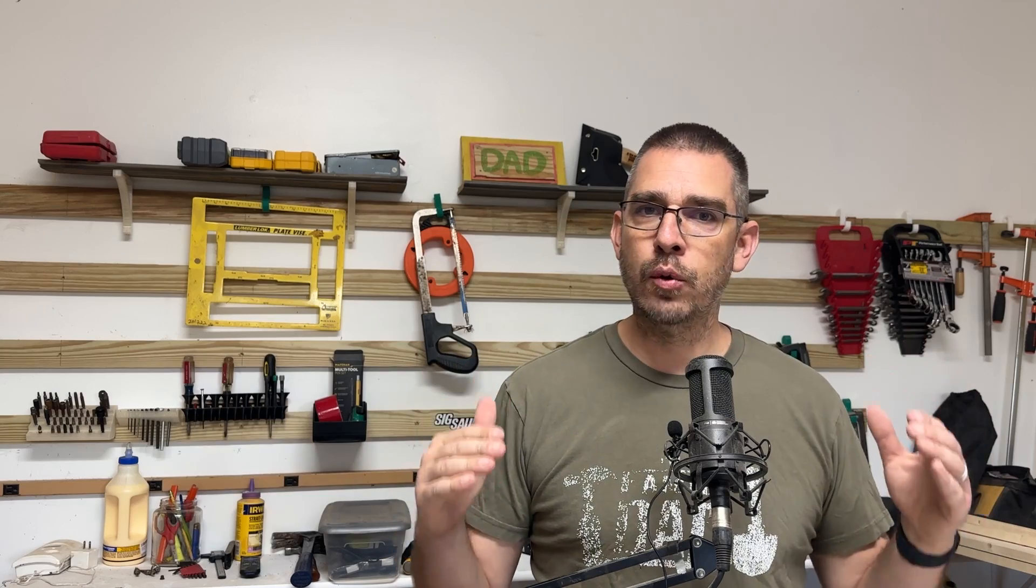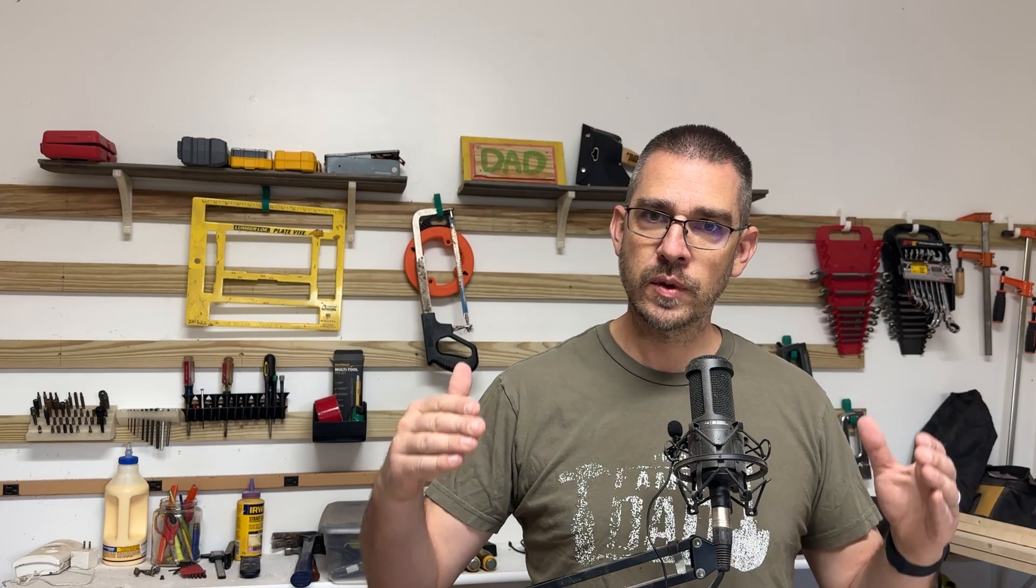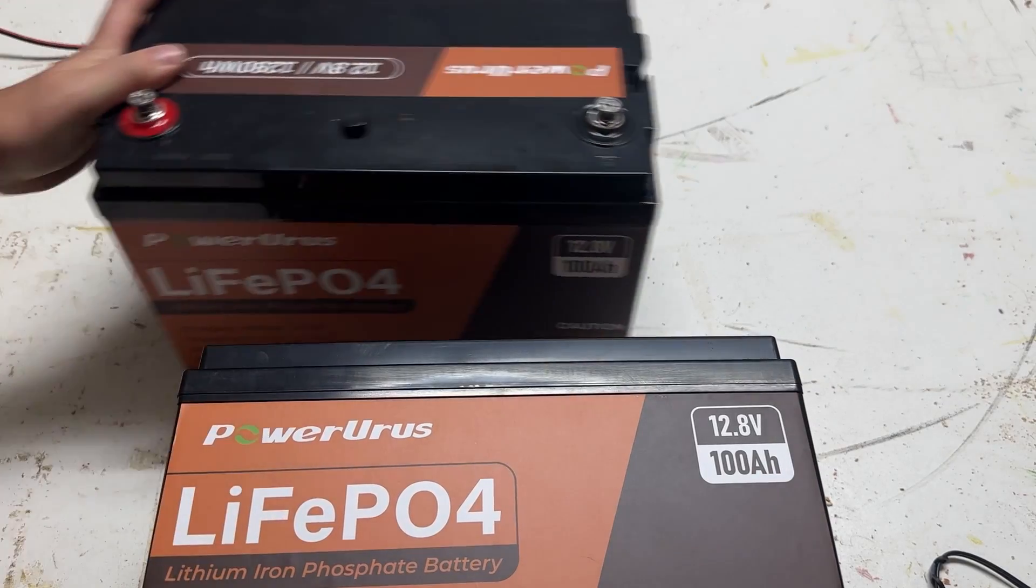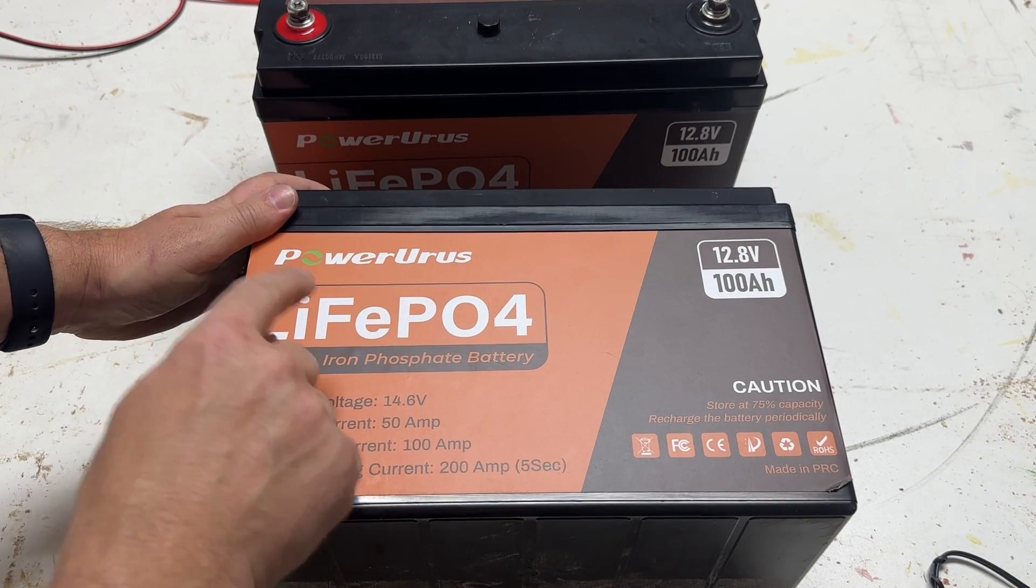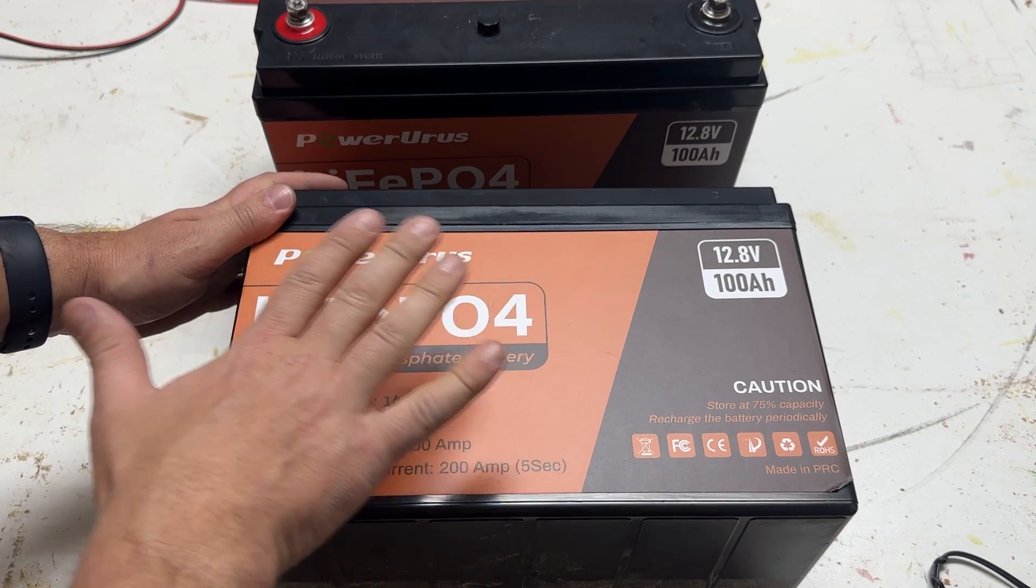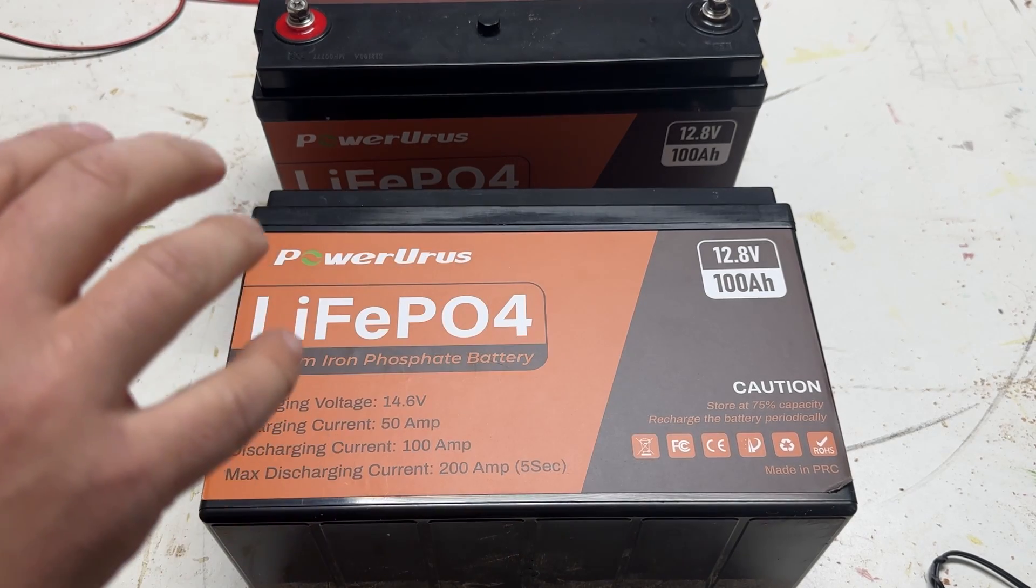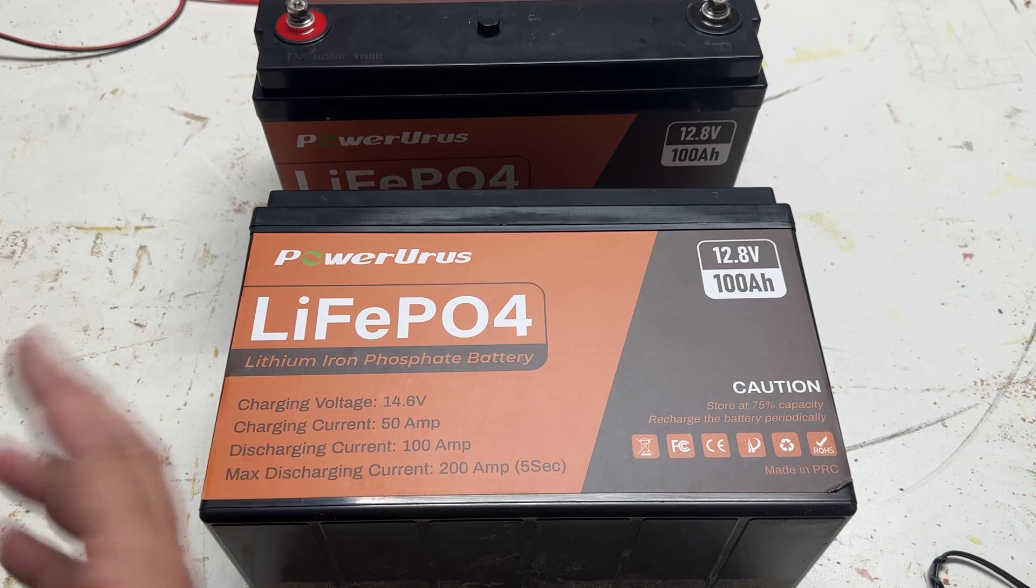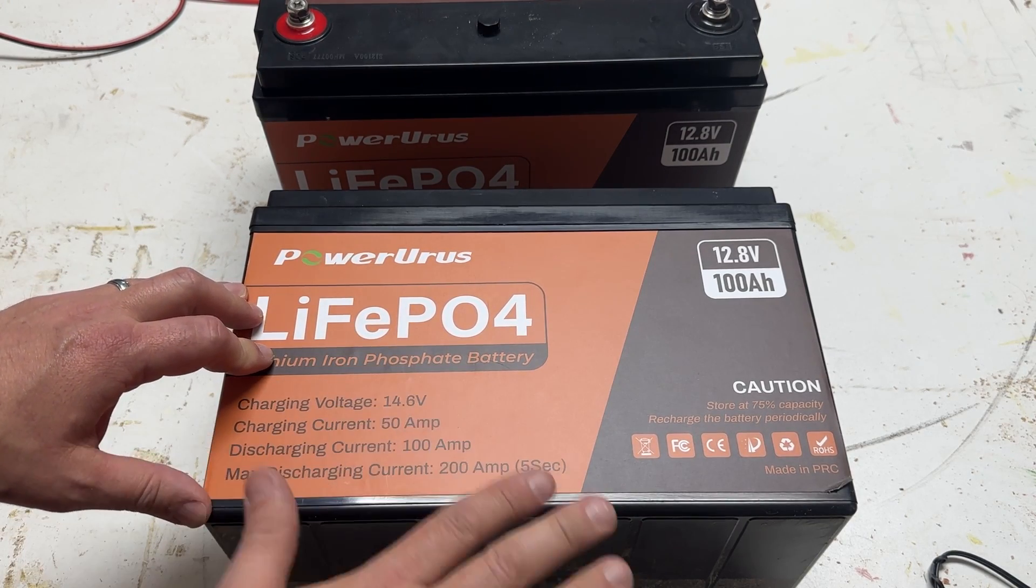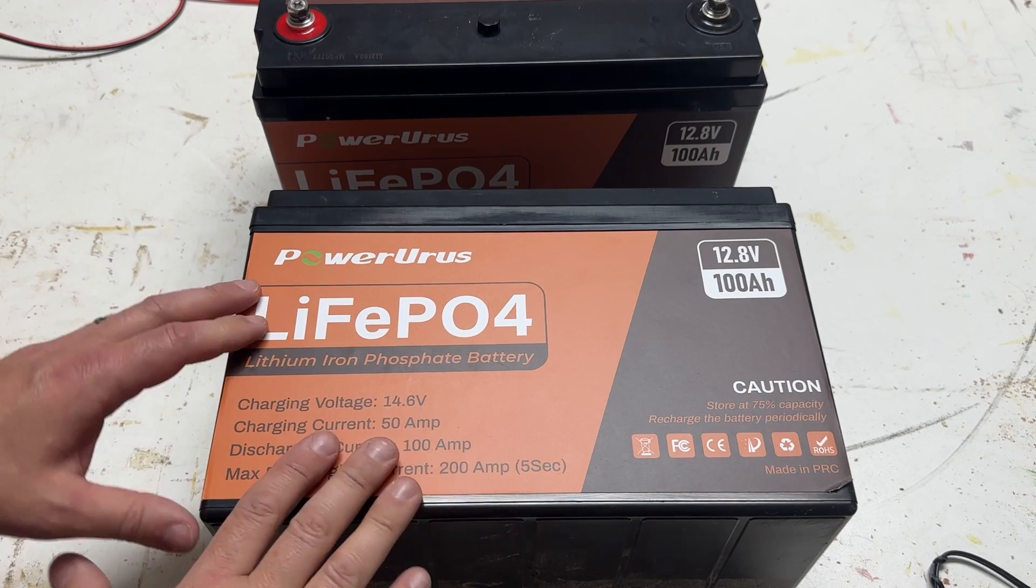We're going to take a look at a couple of these Power Uris batteries. They're 12-volt lithium iron phosphate batteries. We're going to see how we can wire these in different ways to get different results. So here we have two batteries. These are very different than your old lead acid batteries.